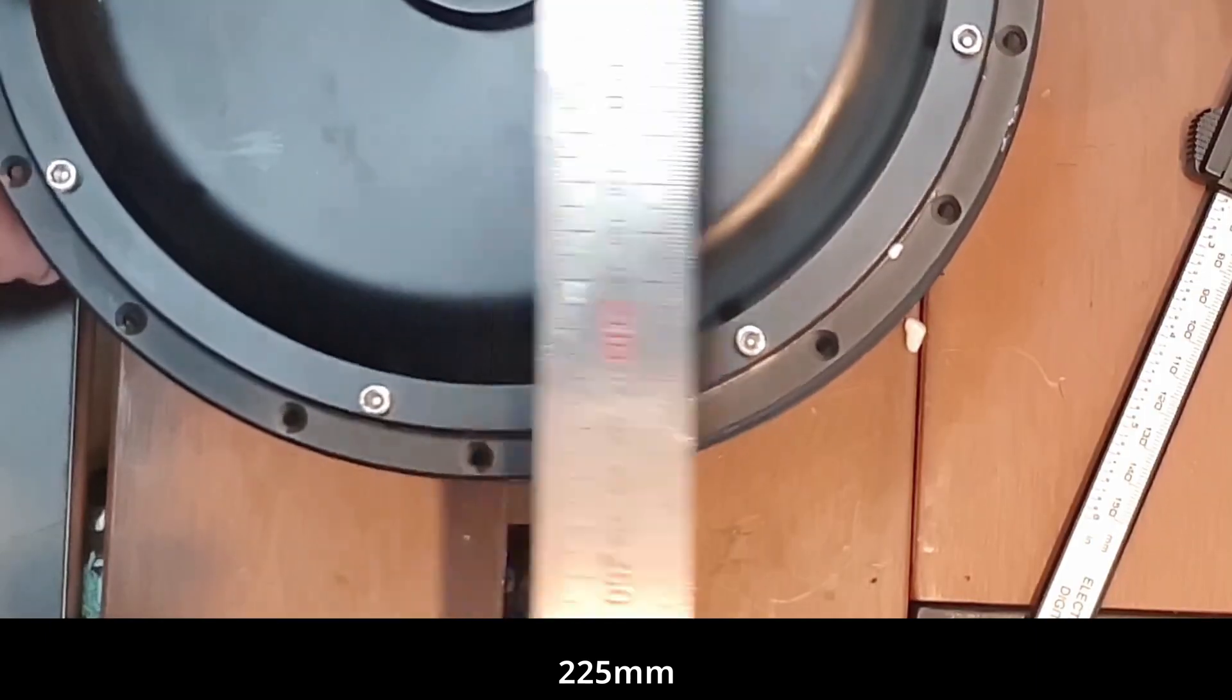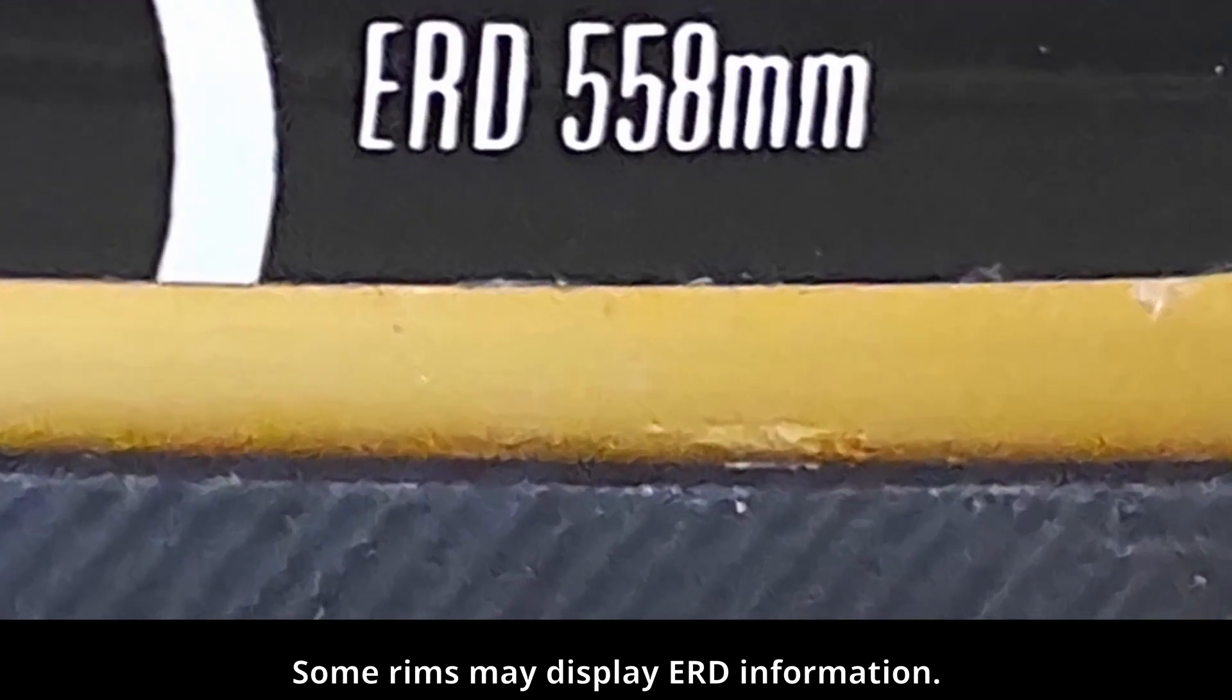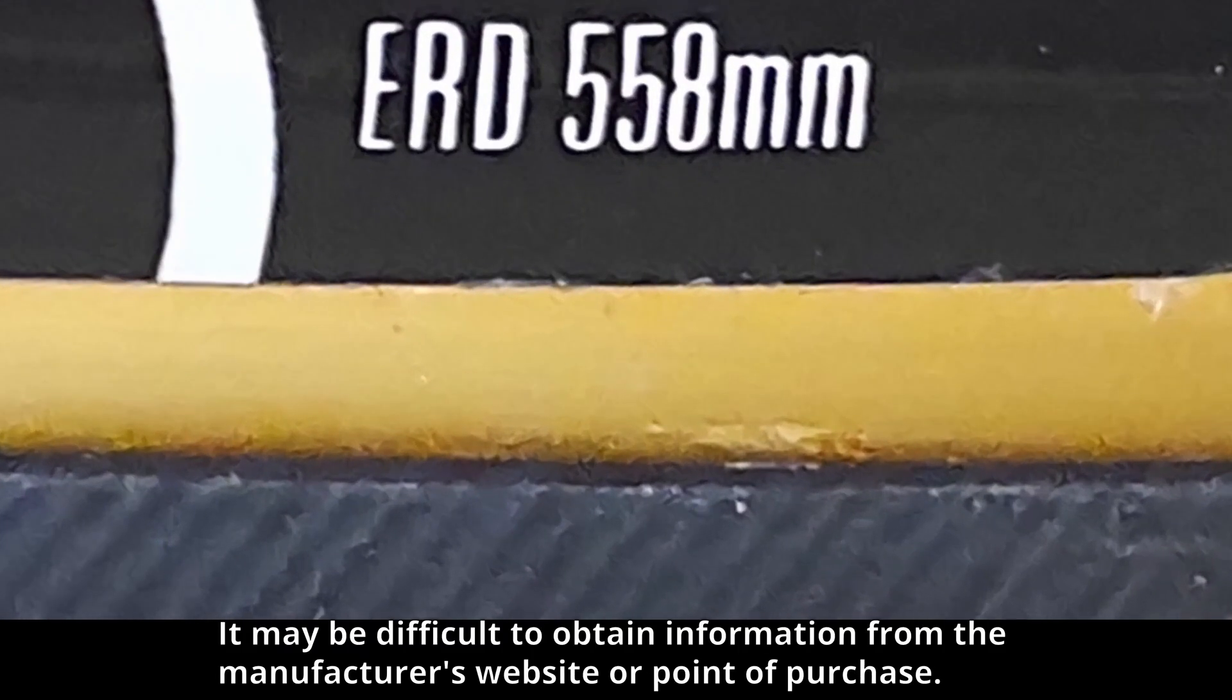225 millimeters drive side flange diameter. Some rims may display ERD information. It may be difficult to obtain information from the manufacturer's website or point of purchase.